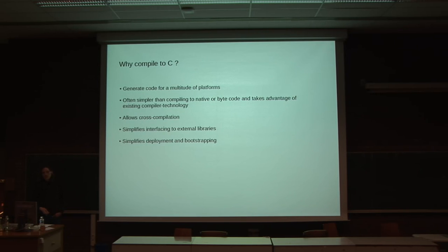Why compile to C? You can use it on many platforms. It's often simpler than compiling directly to native code or to byte code, and it takes advantage of existing compilers and the optimizations they can provide. You can use it for cross-compilation. External libraries written in C++ or C are easy to interface to, and it simplifies deployment and bootstrapping of a system. If you have something in C, you can always build it up from scratch.